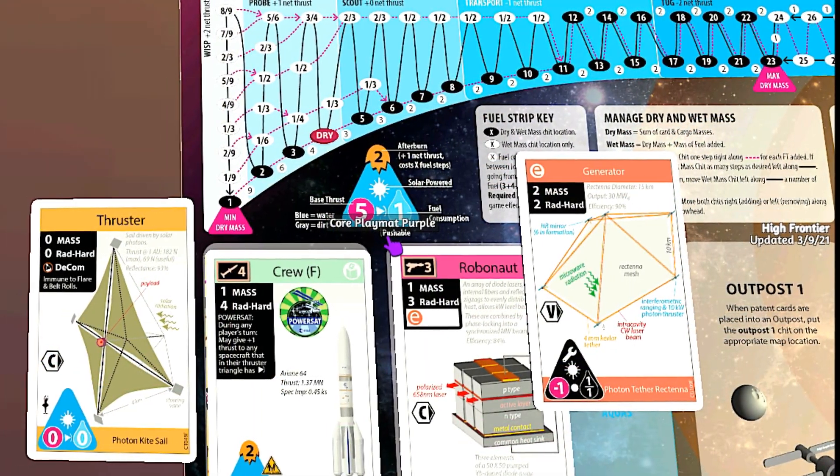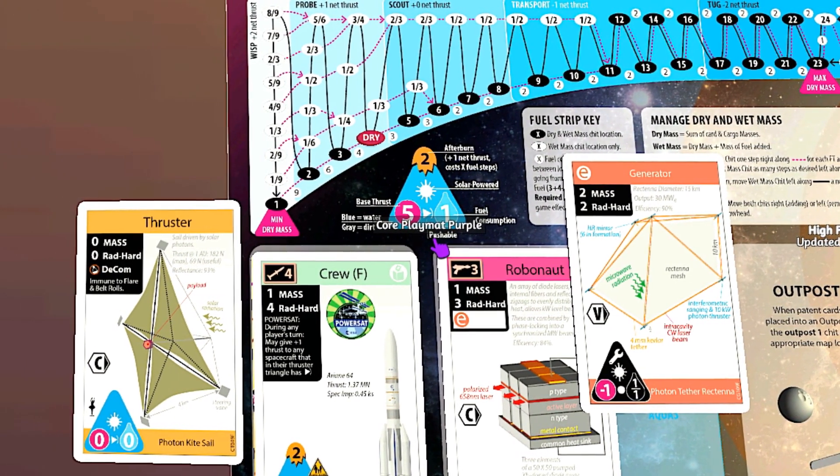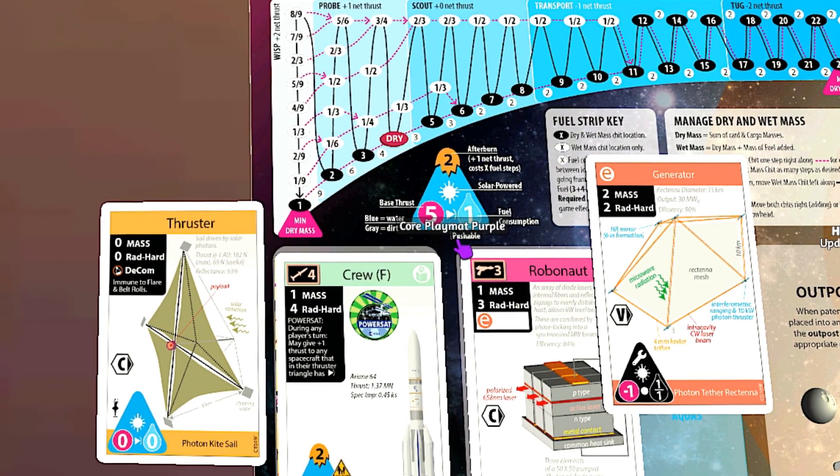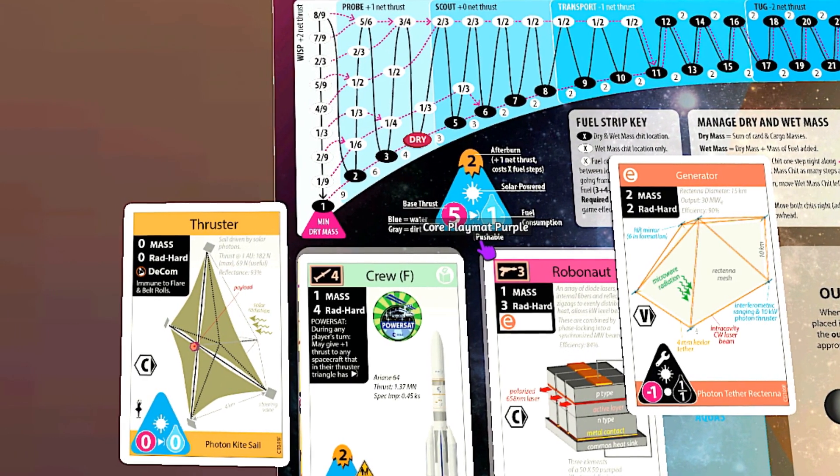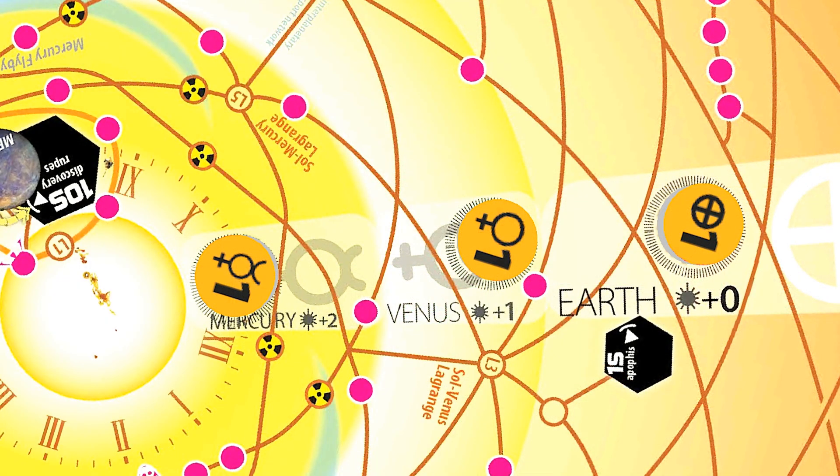The sail has zero thrust on its own, but will be aided by both our low weight and our power sat to have a net thrust of two—no fuel needed. We're on solar power, and the solar power is reflected in the heliocentric zones that you'll find on the map. I find it really neat and elegant as the solar sail gets closer to the sun it gets more thrust.